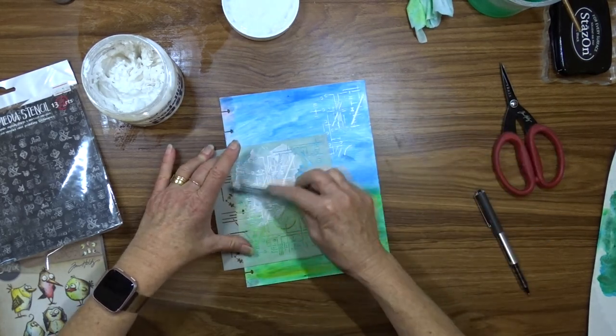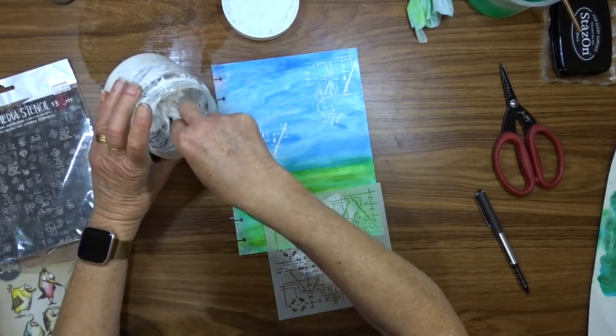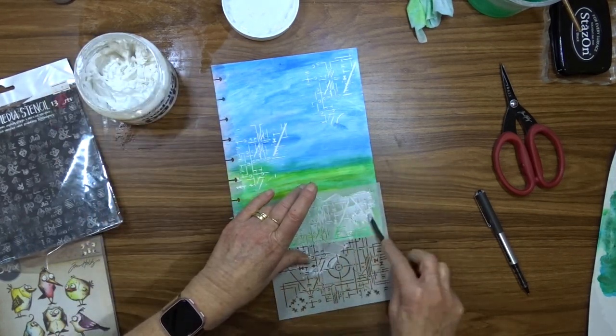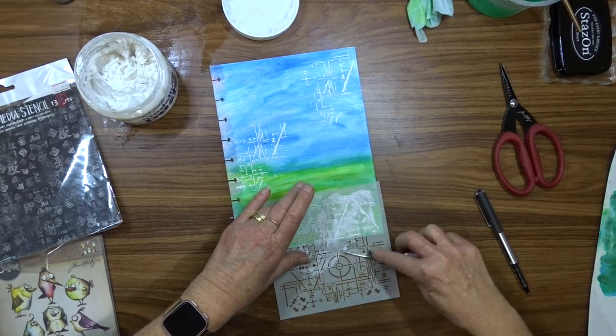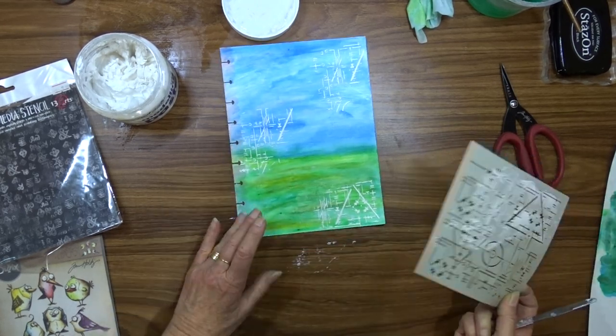I wanted to lift the background a little bit so I'm just going to use my palette knife and apply that texture paste through the stencil randomly on the background. I think I'm going to apply it in about four or five spots.